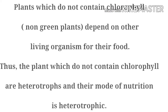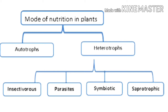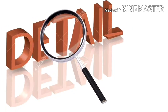Those plants which do not contain chlorophyll — non-green plants — depend on other living organisms for their food. Thus, the plants which do not contain chlorophyll are heterotrophs and their mode of nutrition is heterotrophic. This type of nutrition can be categorized into saprophytic nutrition, parasitic nutrition, insectivorous nutrition, and symbiotic nutrition. Let us now explain these modes in detail.